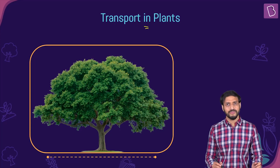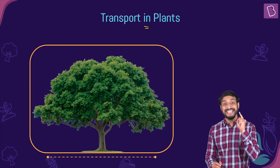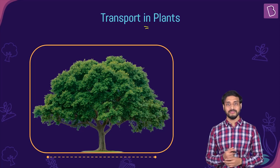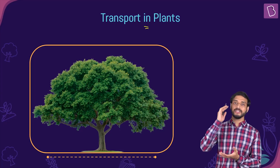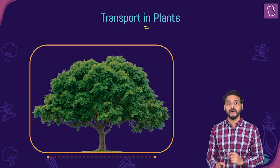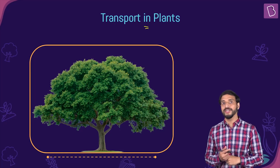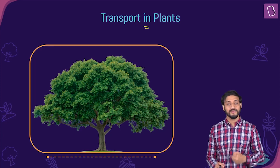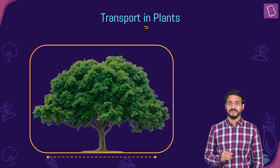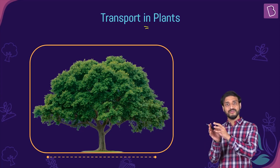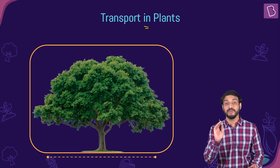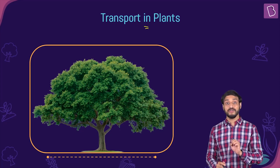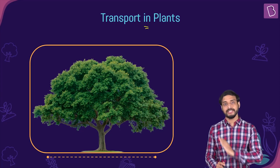Plants themselves do not move, of course, but movement inside the plants is absolutely essential. For example, water is present in the soil — how will the leaves, which may be 10 meters away, or the topmost portion of a 30-meter tall tree, get that water? Leaves are the kitchens of the plant; they need water. And the food prepared in the leaves — how will it be transported to other parts of the plant that cannot prepare food? So transportation inside the plant body is absolutely essential.